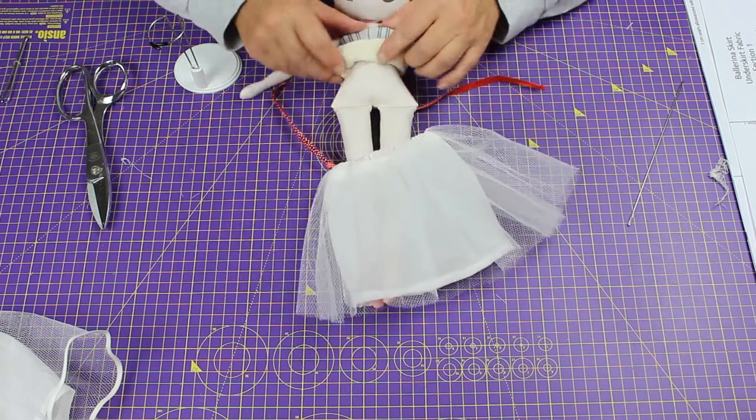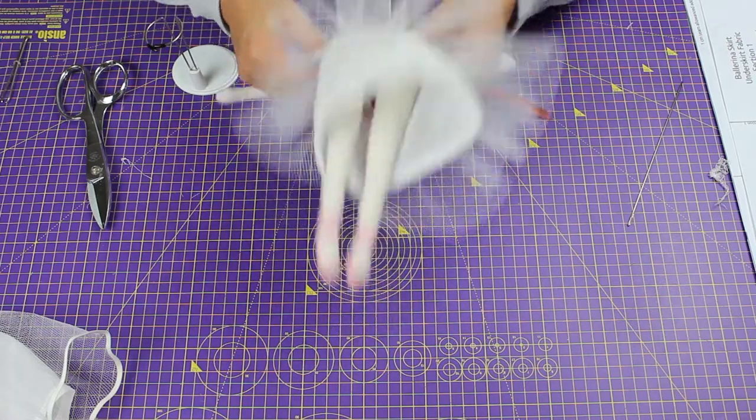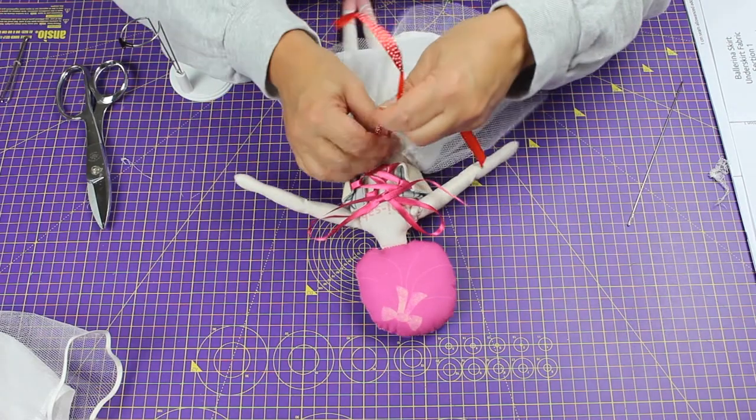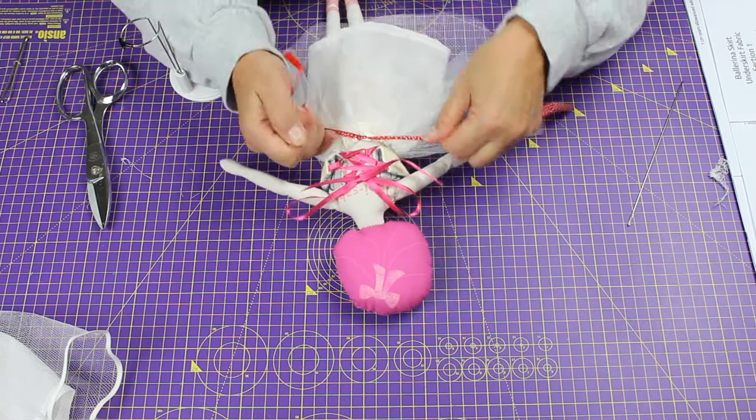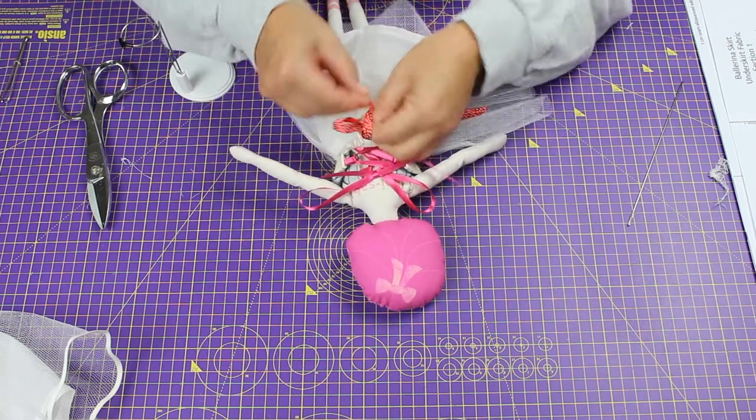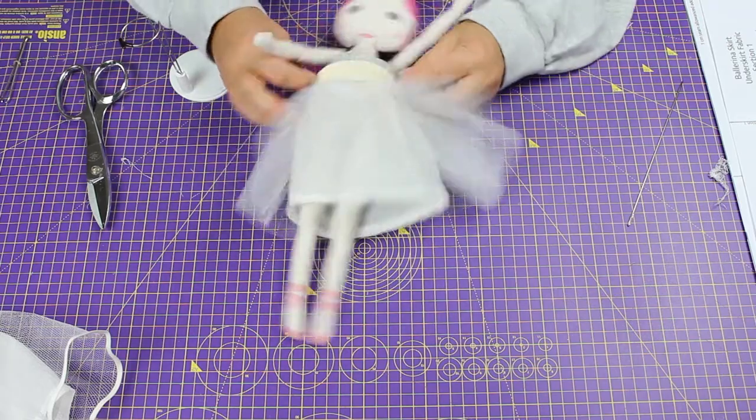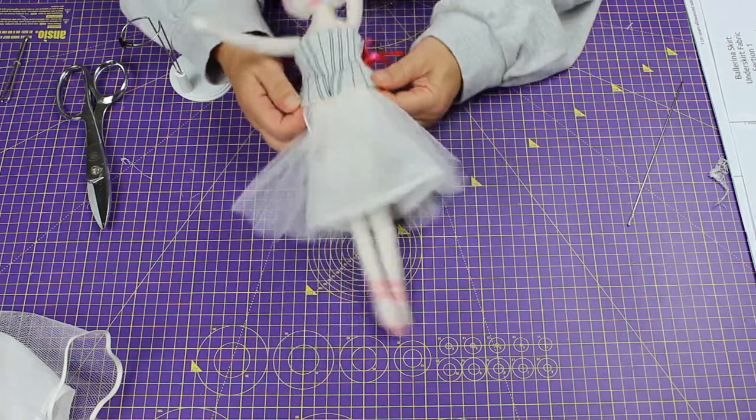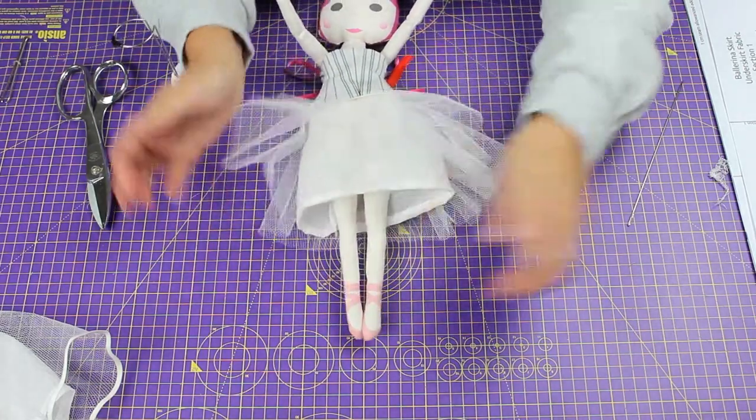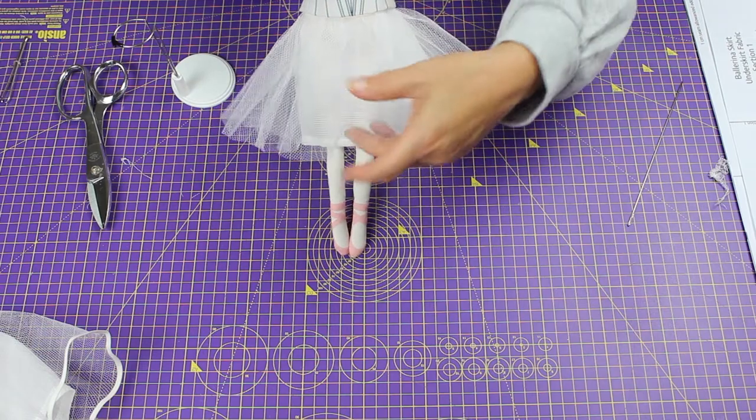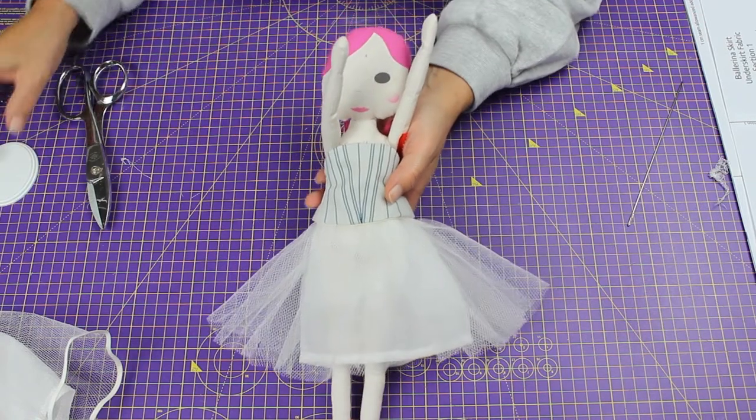Just need to lift the corset up so we can get to her waist, gather and tie the ribbon, and pull the corset back down.